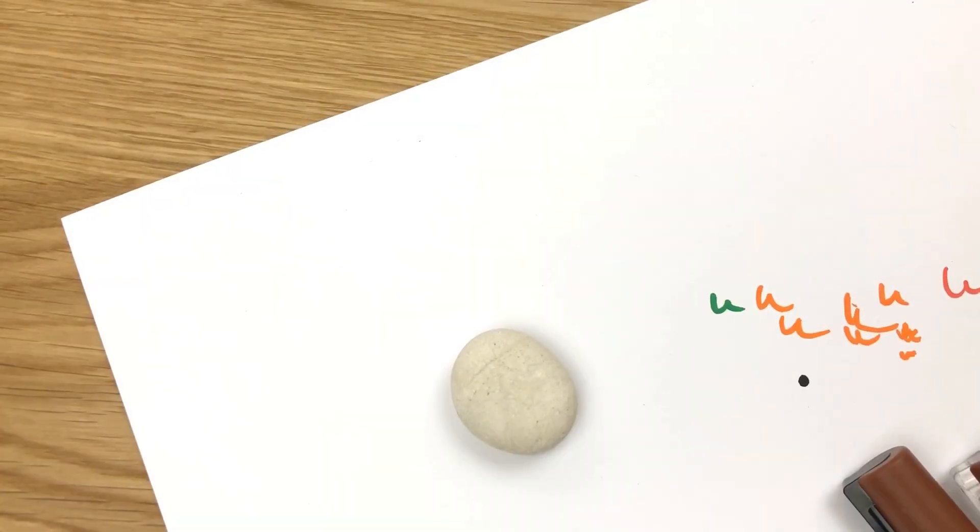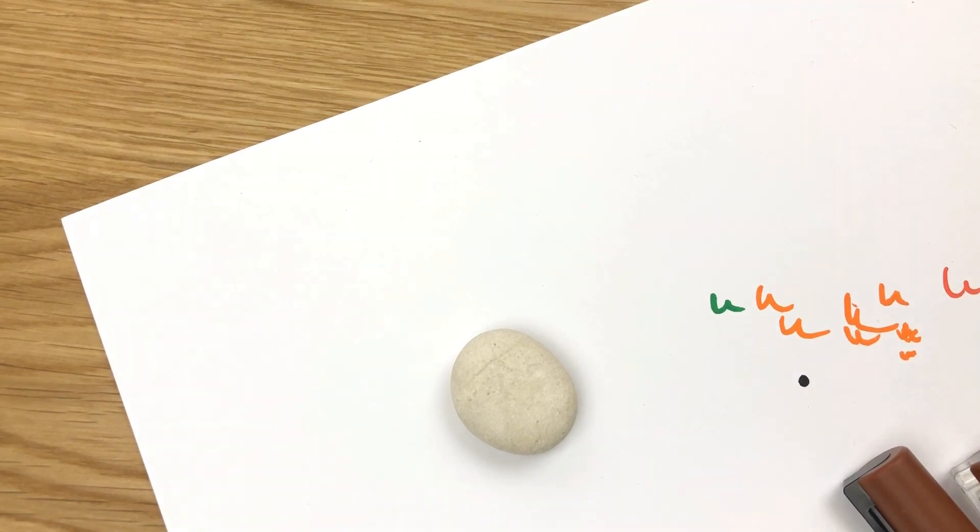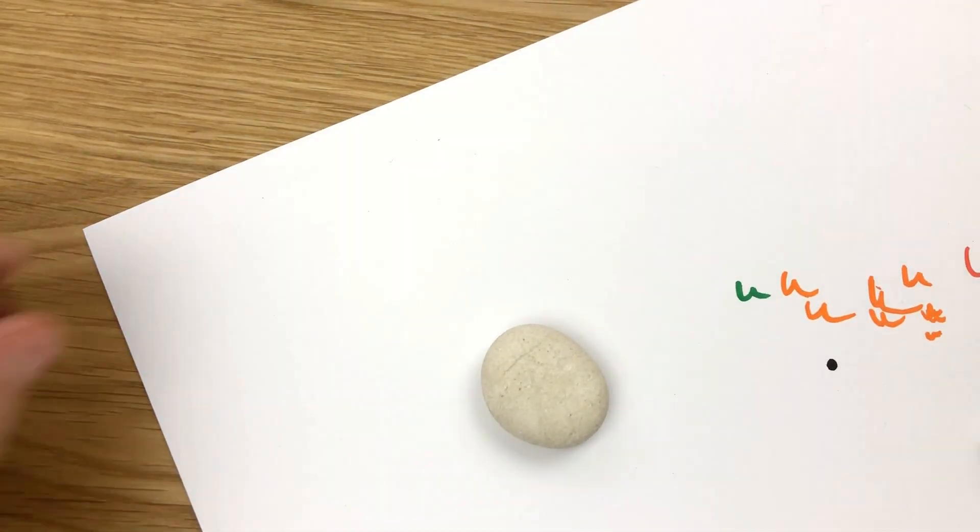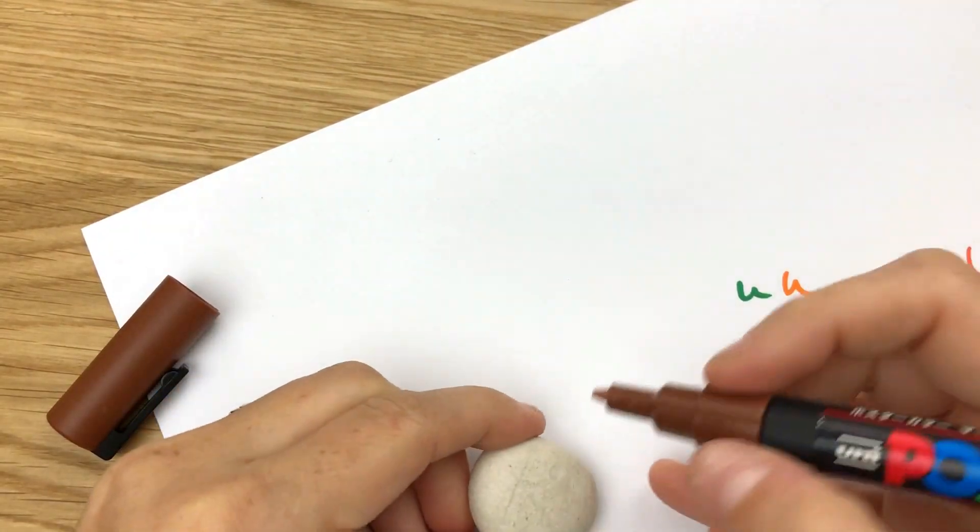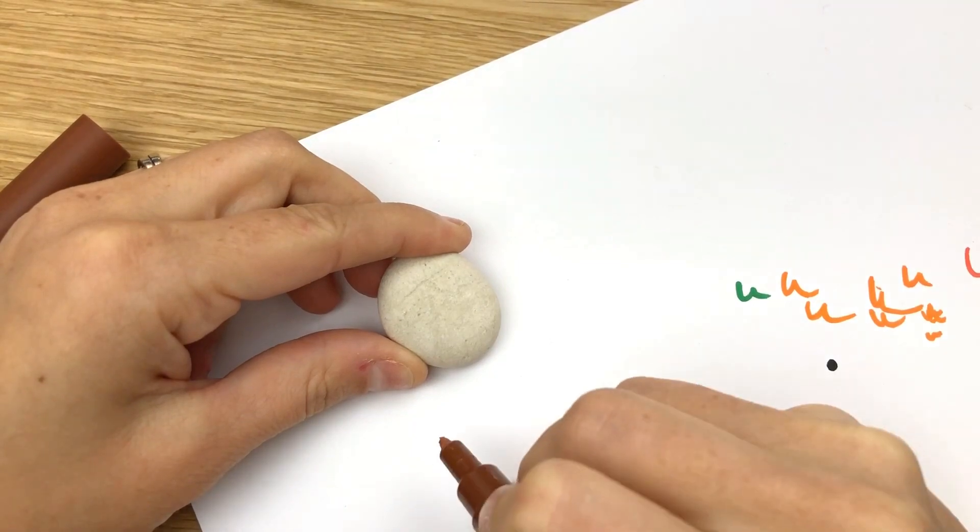Hey guys, welcome to Rock Painting 101. I am hopping on today for a fast little tutorial for you guys. A little fall acorn, he's gonna be a cute little happy acorn and they're pretty simple to do.